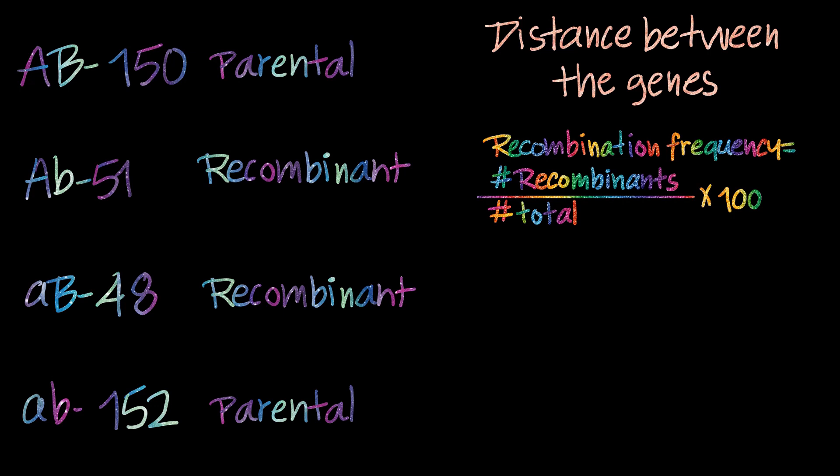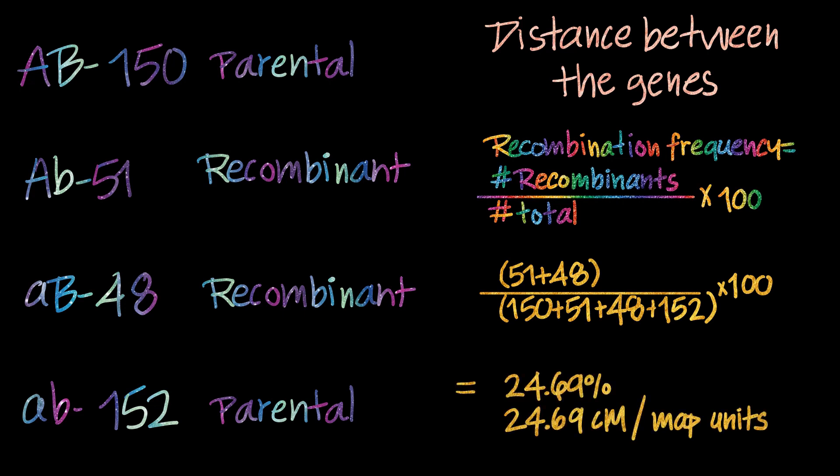Here the recombinant offsprings are 51 and 58 and the total number of offsprings are the total of all the parental and the recombinant offsprings. Upon calculating, we get 24.69% or 24.69 centimorgans or MAP unit which is the distance between genes A and gene B.